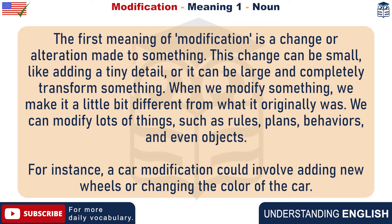When we modify something, we make it a little bit different from what it originally was. We can modify lots of things, such as rules, plans, behaviors, and even objects. For instance, a car modification could involve adding new wheels or changing the color of the car.